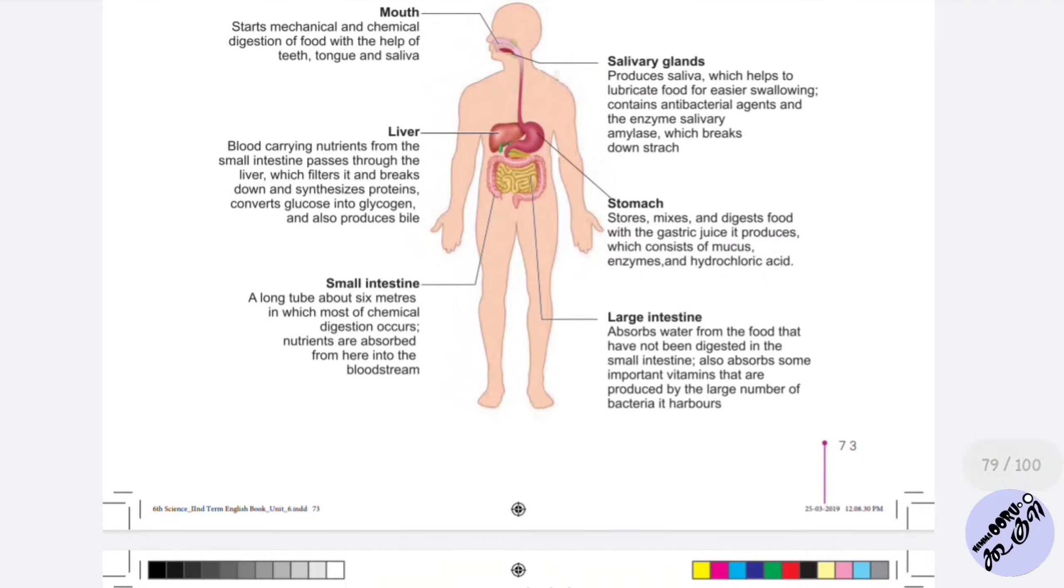Next is small intestine. This is a long tube about 6 meters in which most of the chemical digestion occurs. Nutrients are absorbed from the food into the bloodstream.